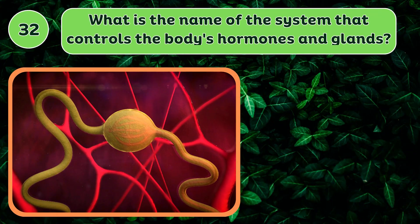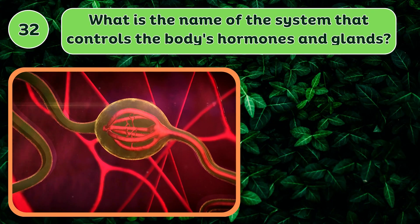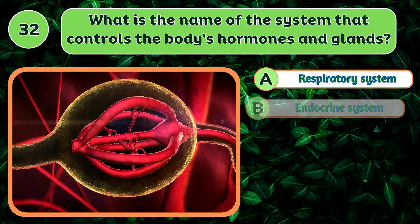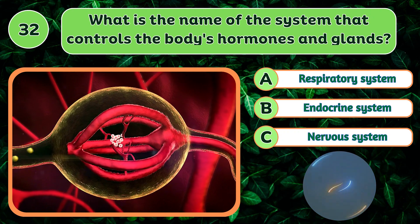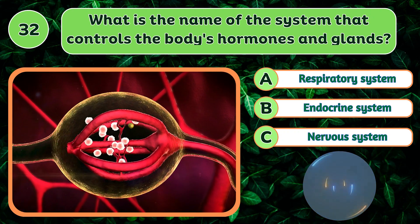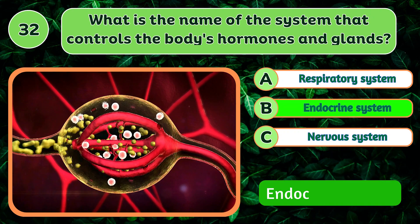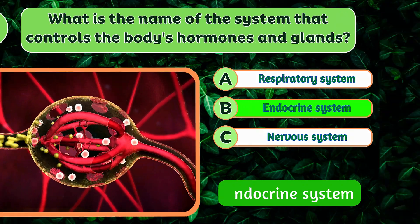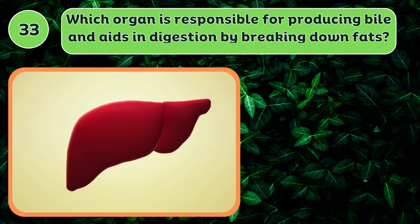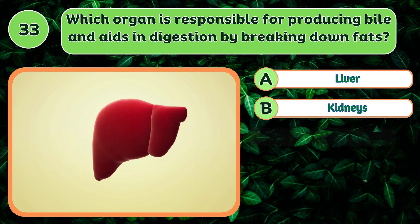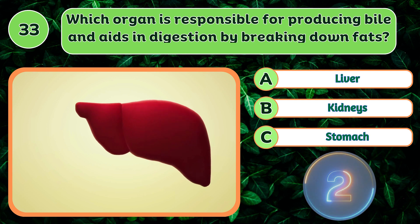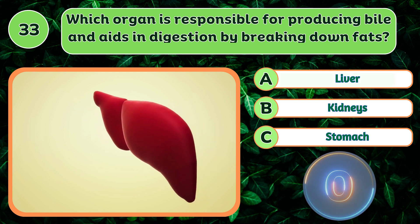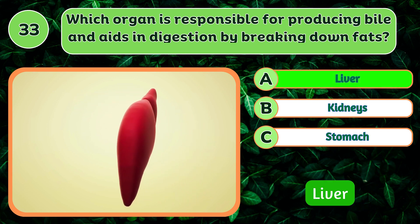What is the name of the system that controls the body's hormones and glands? Endocrine system. Which organ is responsible for producing bile and aids in digestion by breaking down fats? Liver.